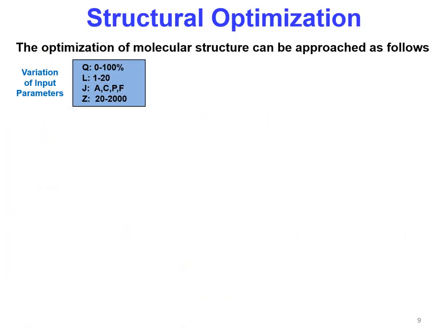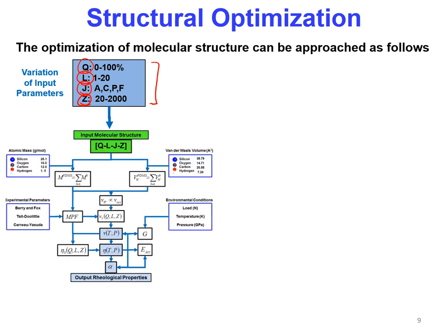Starting with the overview: the four structural features — percent branch content, branch length, branch type, and polymer backbone length — the first set of models covers how we relate these to rheological properties. This goes through a series of steps: calculating molecular mass, van der Waals specific volume, specific volume, molecular packing factor, specific volume at atmospheric pressure, structural features associated with load and operating conditions, viscosity as a function of structure, and then viscosity as a function of temperature and pressure, which is also a function of specific volume at temperature and pressure. This allows us to obtain pressure viscosity index and activation energy of the various siloxane structures.